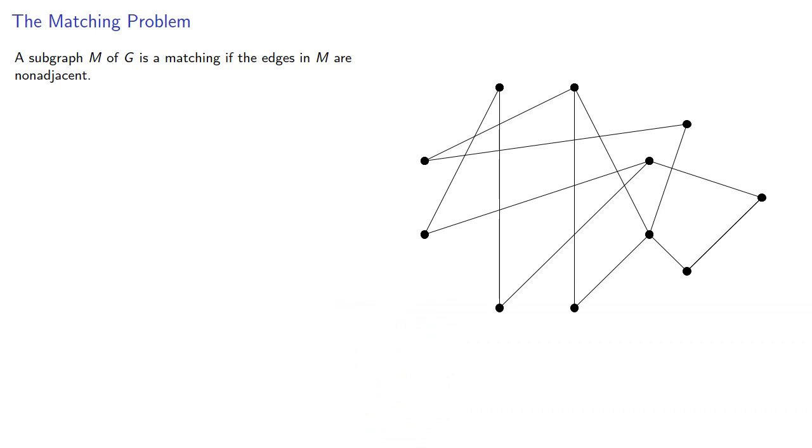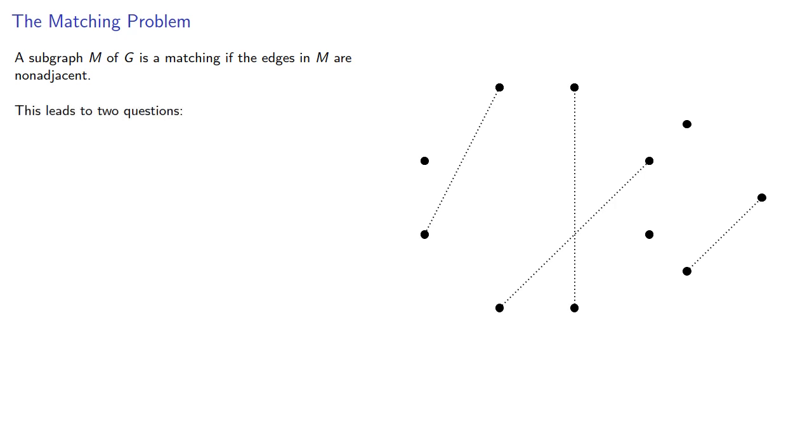A subgraph M of G is a matching if the edges in M are non-adjacent. This leads to two questions. Can we find a maximum matching where |M| is greater than or equal to the number of edges in any other matching? And can we find a perfect matching that includes all vertices in our original graph? We'll look at the first one first.